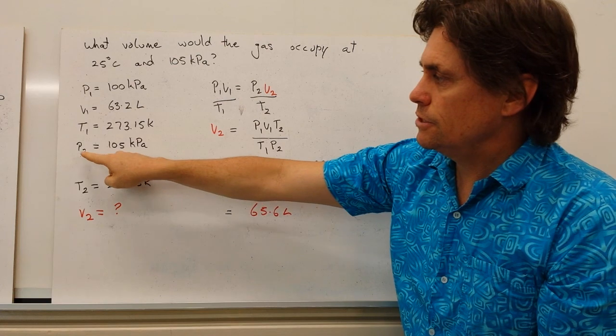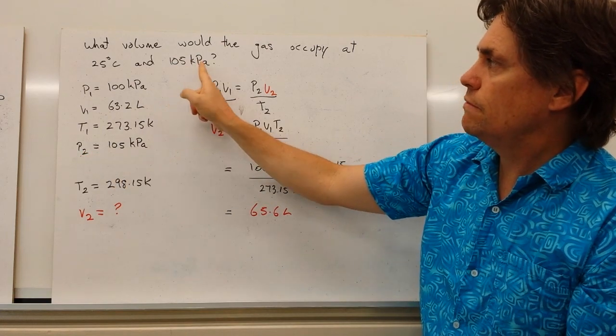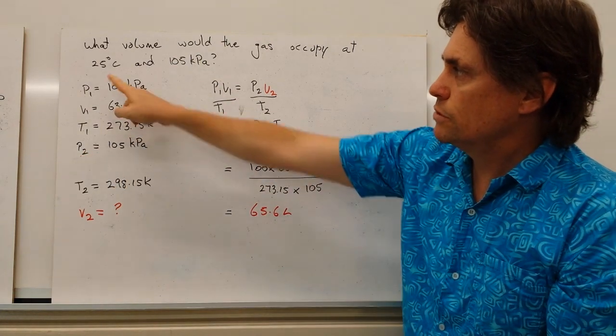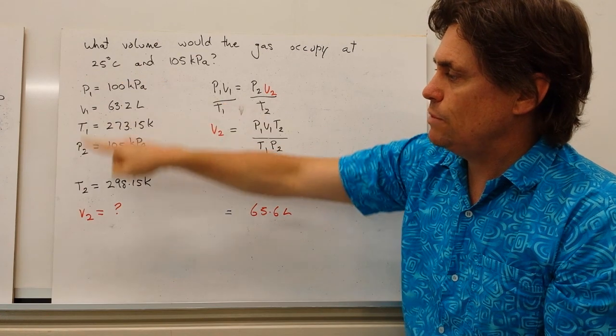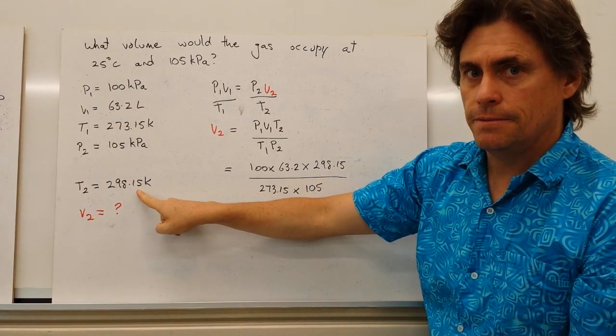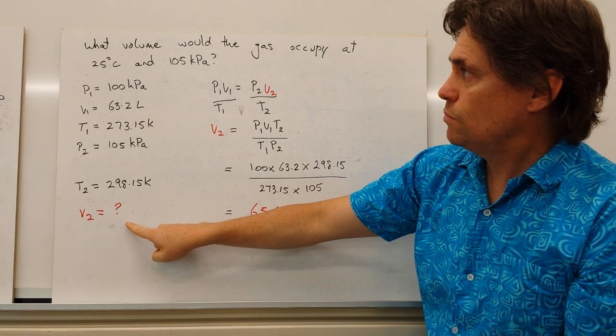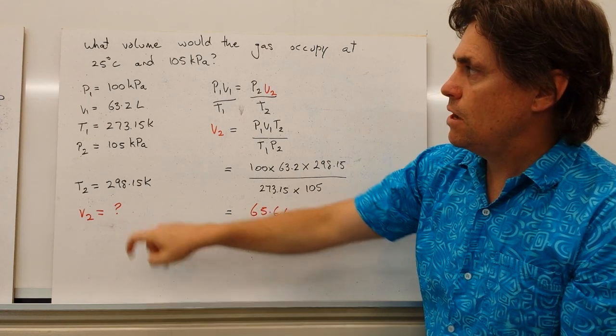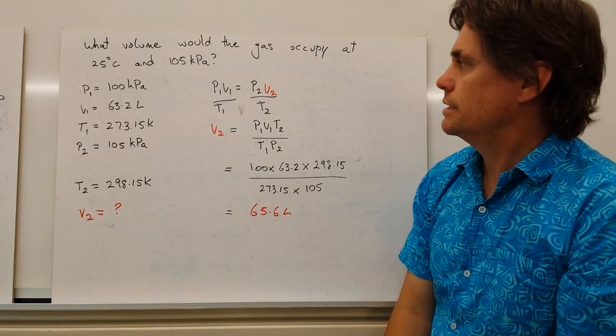Our final set of conditions, we've changed the pressure to 105 kilopascals. We've also got 25 degrees C here, which is 298.15 K. The only thing we don't have and what it's asking for is the final volume when we adjust these conditions.